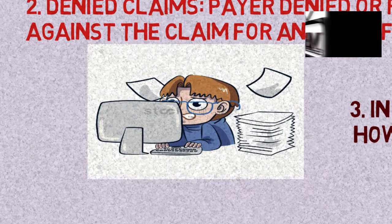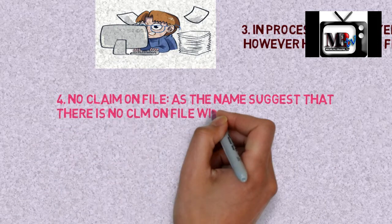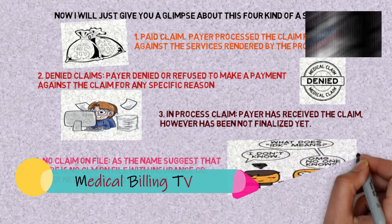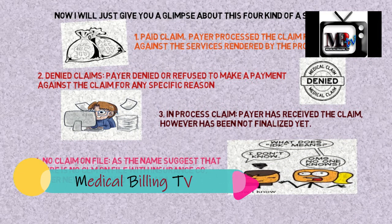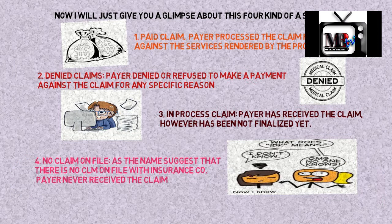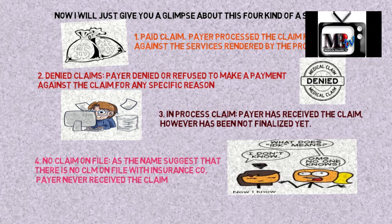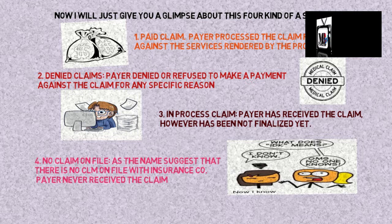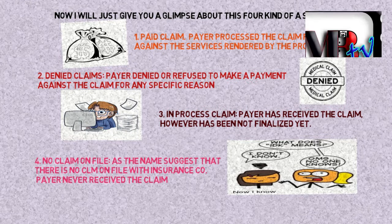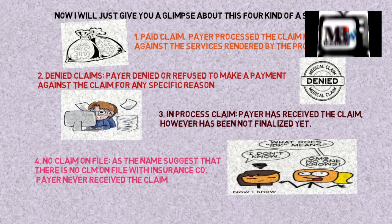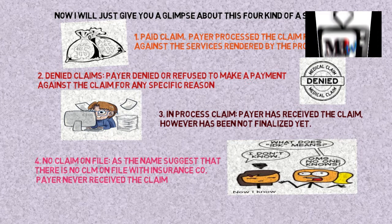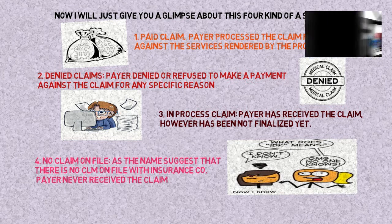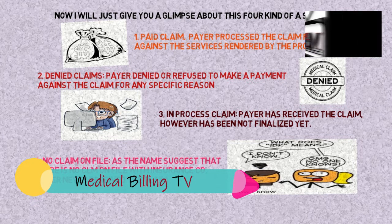Denied claim means the insurance company is going to refuse payment because of any number of reasons — it is not coming up as per their parameters. That will be discussed in denial management. The third status is in-process: the insurance company has received the claim but hasn't finalized it yet. They are evaluating whether to process it for payment, refuse it, or whether they require medical records or an authorization number.